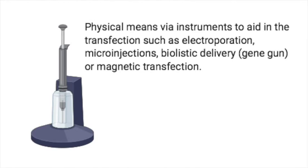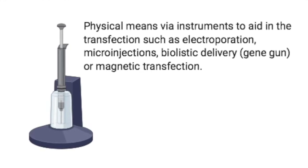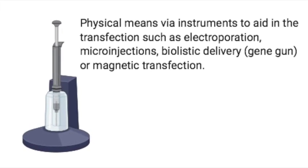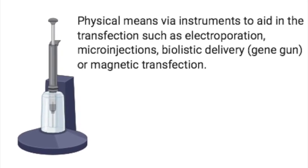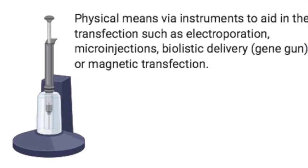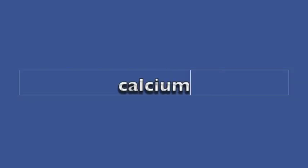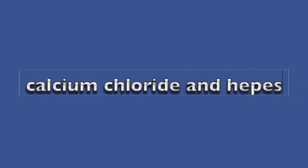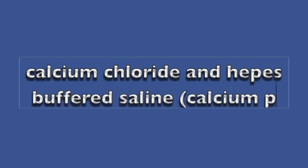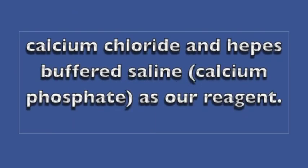You can also use physical means via instruments to aid in the transfection. Some of the physical means include electroporation, microinjection, biolistic delivery, the gene gun, or magnetic transfection. But the method that we're looking at uses calcium chloride mixed with HEPES buffered saline, which is called the calcium phosphate transfection.